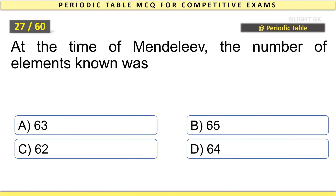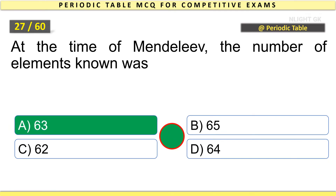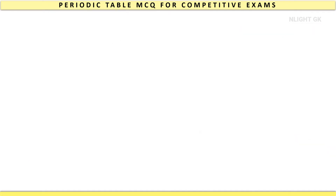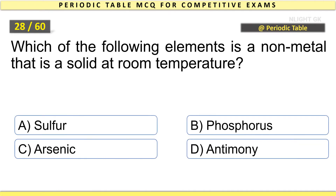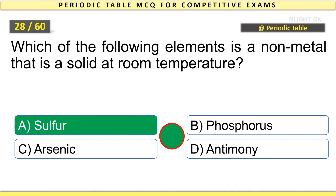At the time of Mendeleev, the number of elements known was 63. Which of the following elements is a non-metal that is a solid at room temperature? Sulfur.